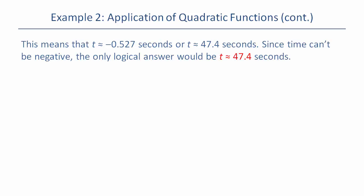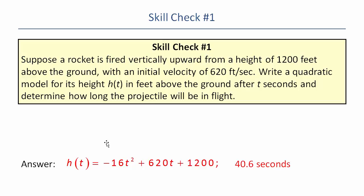Which we saw from the graph. Try this skill check. If it's shot from a height of 1,200 at 620 feet per second, see if you can write the quadratic and determine how long the projectile will be in flight, i.e., how long does it take to hit the ground?